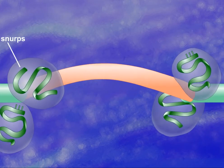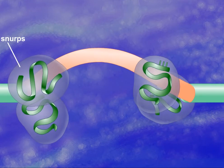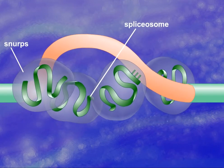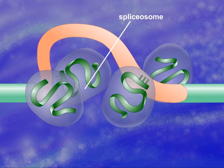These SNRNPs then cluster together, forming a larger complex called a spliceosome, which carries out the removal of the intron.